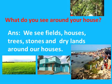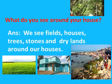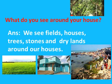My dear children, what are the things you see around your house? We can see fields where you grow your ragi or millets, houses, neem trees, and dry lands with stones around your houses. We can see fields — it can be a ragi field or a millet field — your neighbors' houses, and beautiful trees like neem trees.